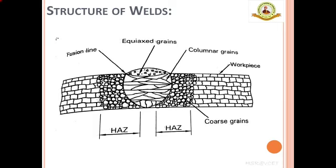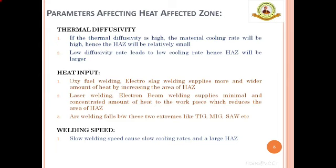The heat affected zone is often the weakest part of the welded metal because it neither possesses the properties of the base metal nor those of the solidified weld metal. Consequently, the heat affected zone is the region where most failures in a welded joint occur. The component usually fails in this region as the microstructure is coarse in nature and weak. So, in order to have a good joint, it is very necessary to reduce the heat affected zone. We need to understand what factors the heat affected zone depends on.